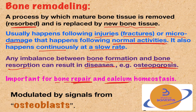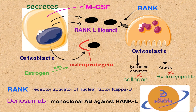Bone remodeling is mediated by osteoblasts and osteoclasts, but it is modulated or regulated only by osteoblasts. Osteoblasts secrete a number of substances that either stimulate or inhibit the function of the osteoclasts. The two major substances that stimulate osteoclast function are monocyte colony stimulating factor and RANK ligand.